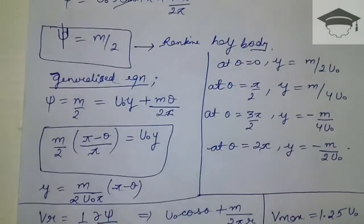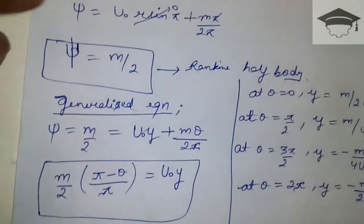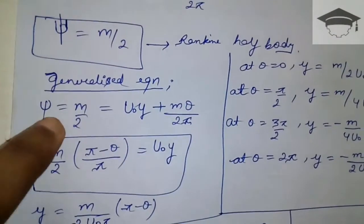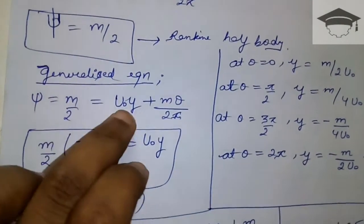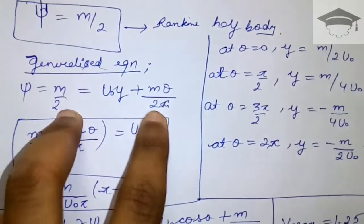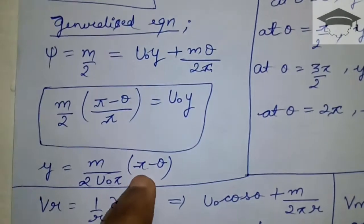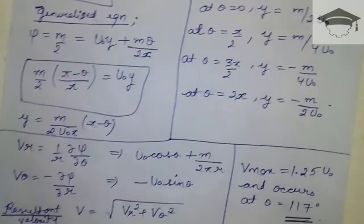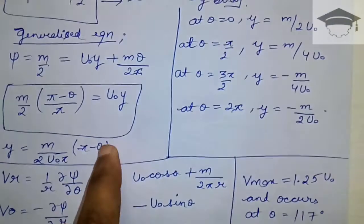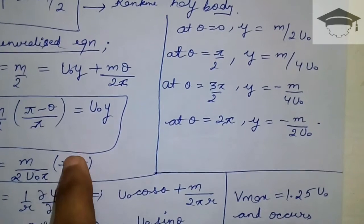Substituting ξ = m/2 into the original ξ equation: m/2 = u₀y + mθ/(2π). Solving for y gives y = m/(2πu₀) × (π − θ). For different values of θ: at θ = 0, y = m/(2u₀); at θ = π/2, y = m/(4u₀); at θ = 3π/2, y = −m/(4u₀); and at θ = 2π, y = −m/(2u₀).